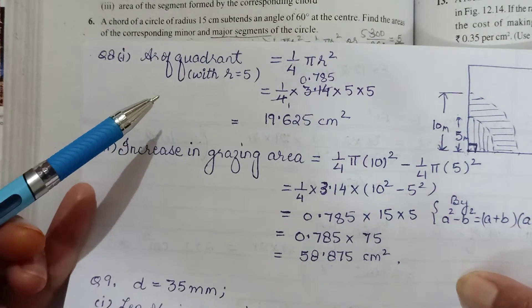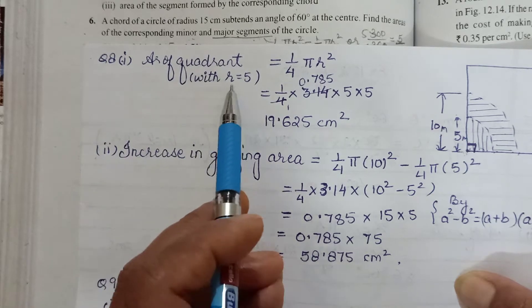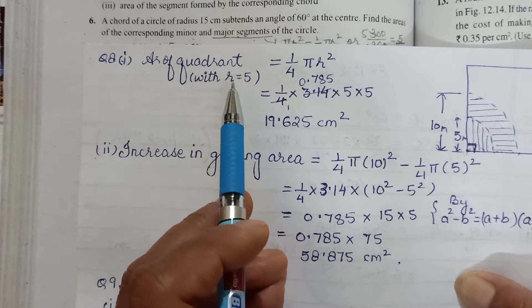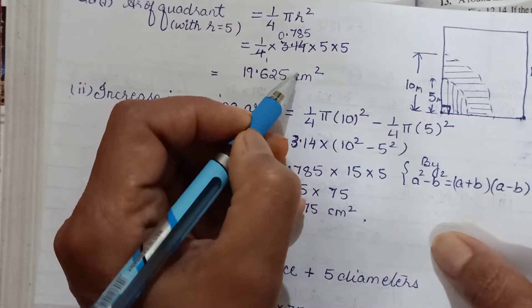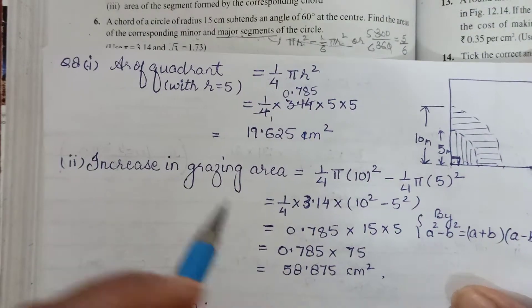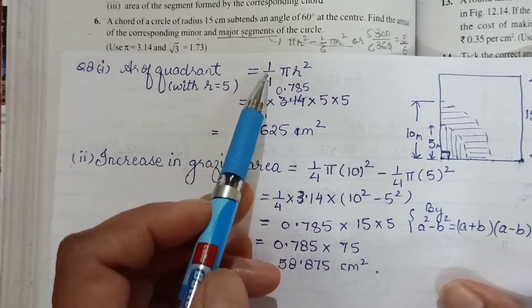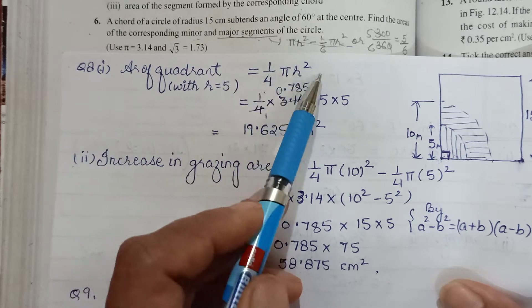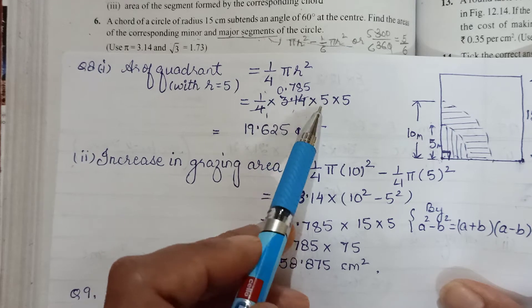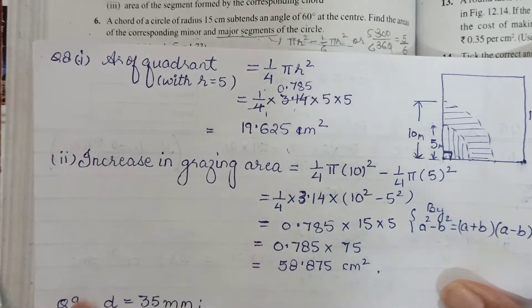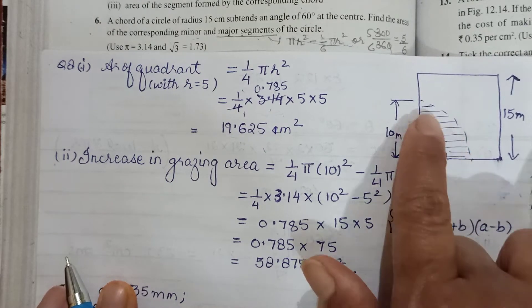For the first part, when they're asking find the area it can graze, you will have to find the area of quadrant with radius 5 meters. Area of quadrant is 1/4 πr². Put the values, they mentioned to use π as 3.14, working it out you know your area that has been grazed.